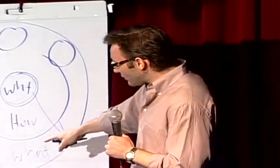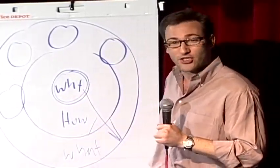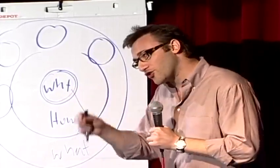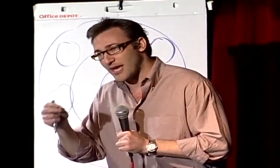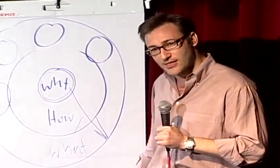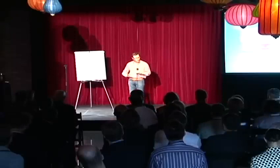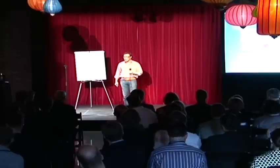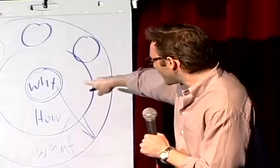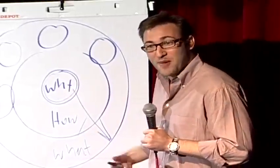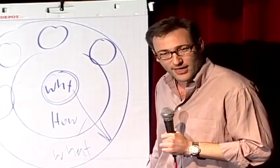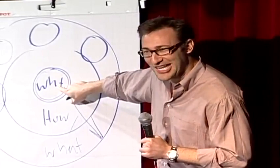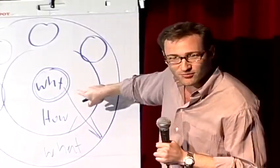In other words, when we communicate from the outside in, yes, people can understand vast amounts of complicated information like features and benefits and facts and figures. It just doesn't drive behavior. When we communicate from the inside out, we're talking directly to the part of the brain that controls behavior, and then we allow people to rationalize it with the tangible things we say and do. This is where gut decisions come from. Sometimes you can give somebody all the facts and figures, and they say, I know what all the facts and details say, but it just doesn't feel right. Why would we use that verb? It doesn't feel right. Because the part of the brain that controls decision-making doesn't control language, and the best we can muster up is, I don't know, it just doesn't feel right. Or sometimes you say you're leading with your heart. Well, I hate to break it to you, those aren't other body parts controlling your behavior. It's all happening here in your limbic brain, the part of the brain that controls decision-making and not language.